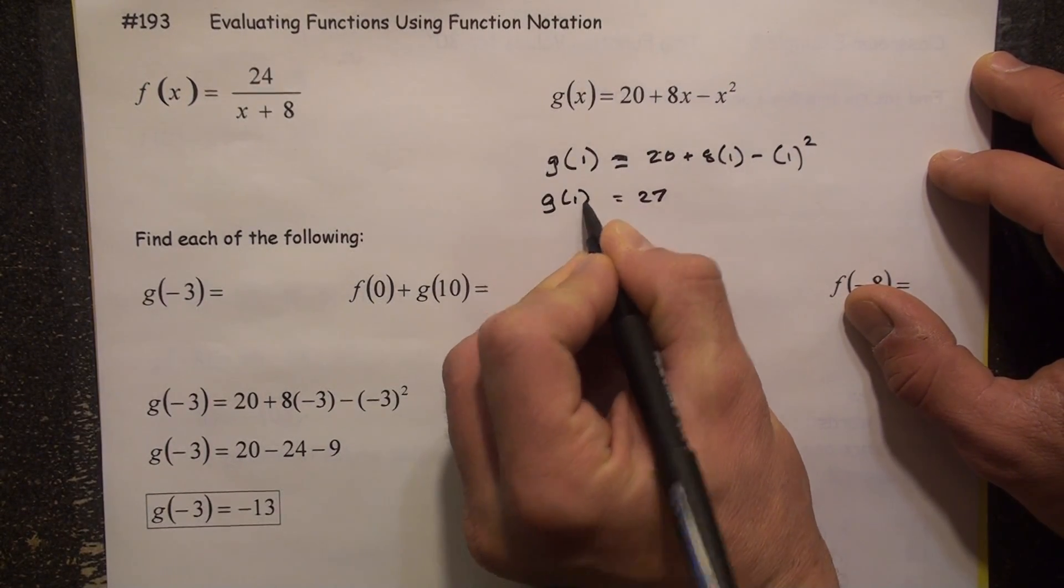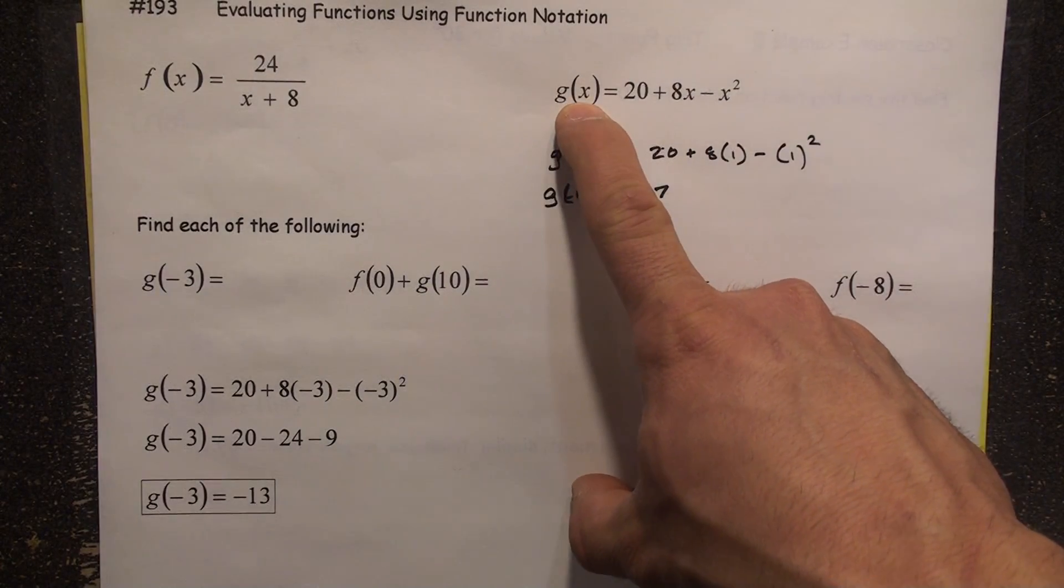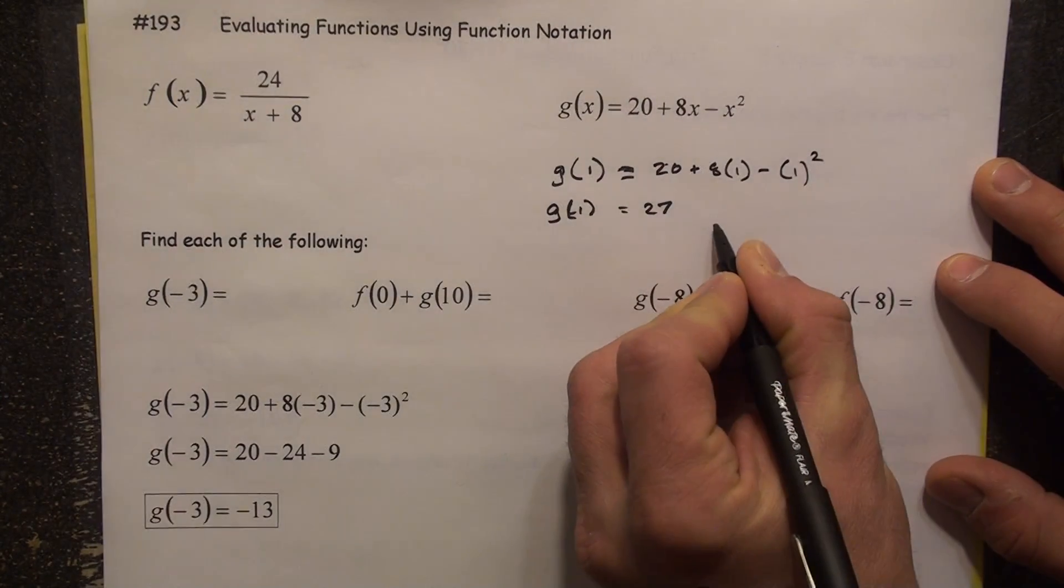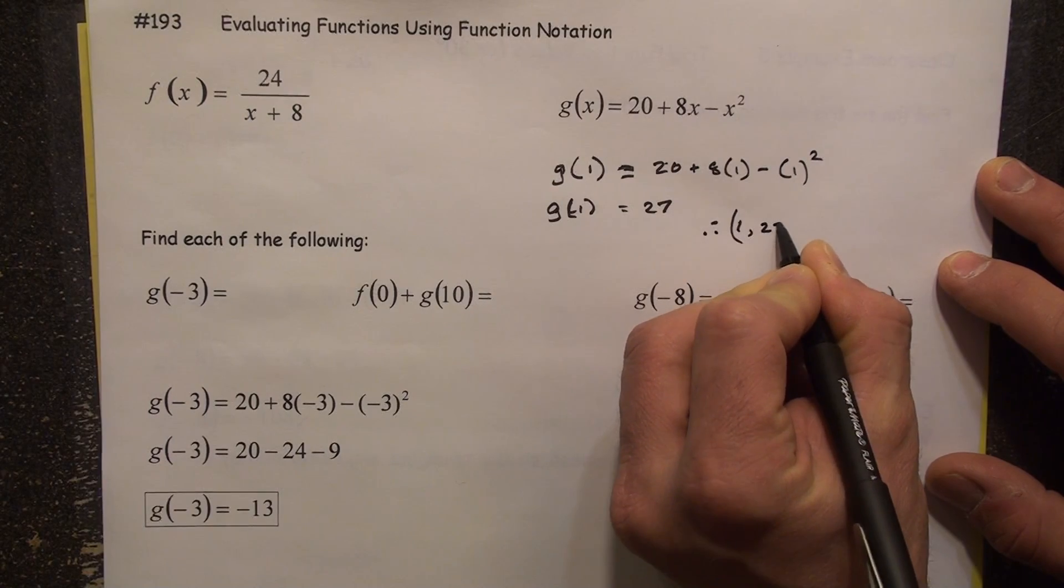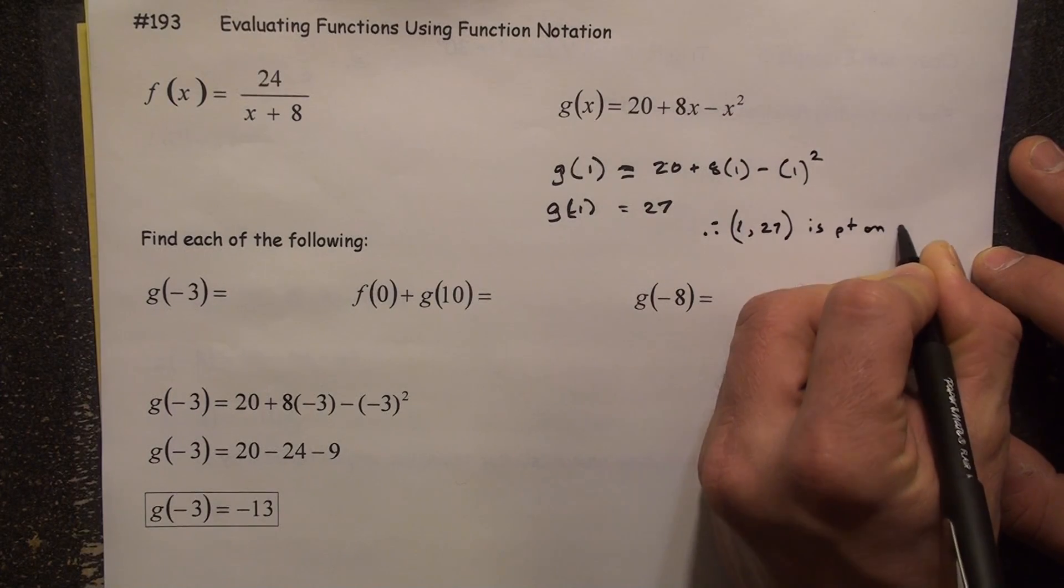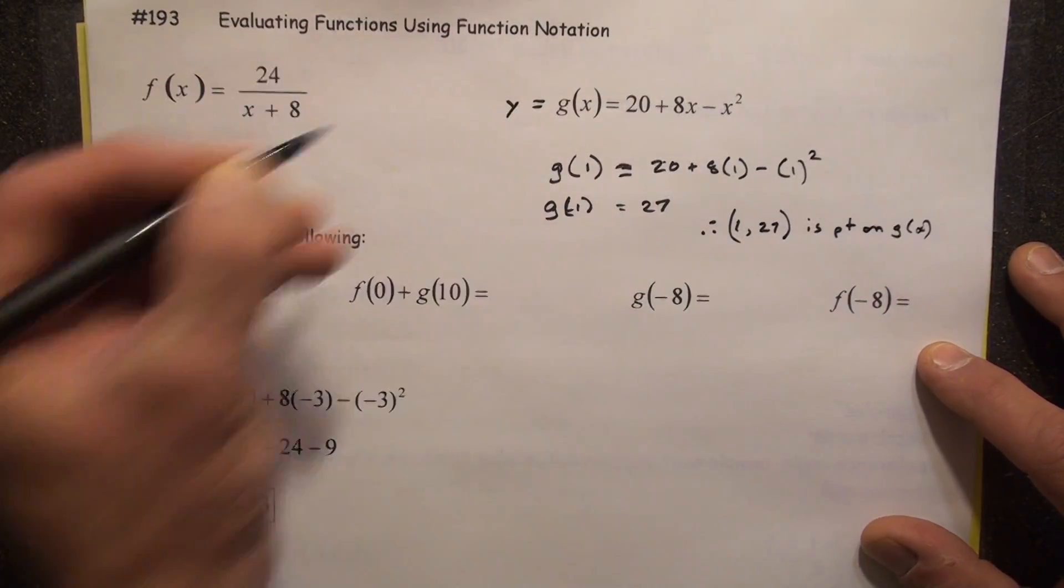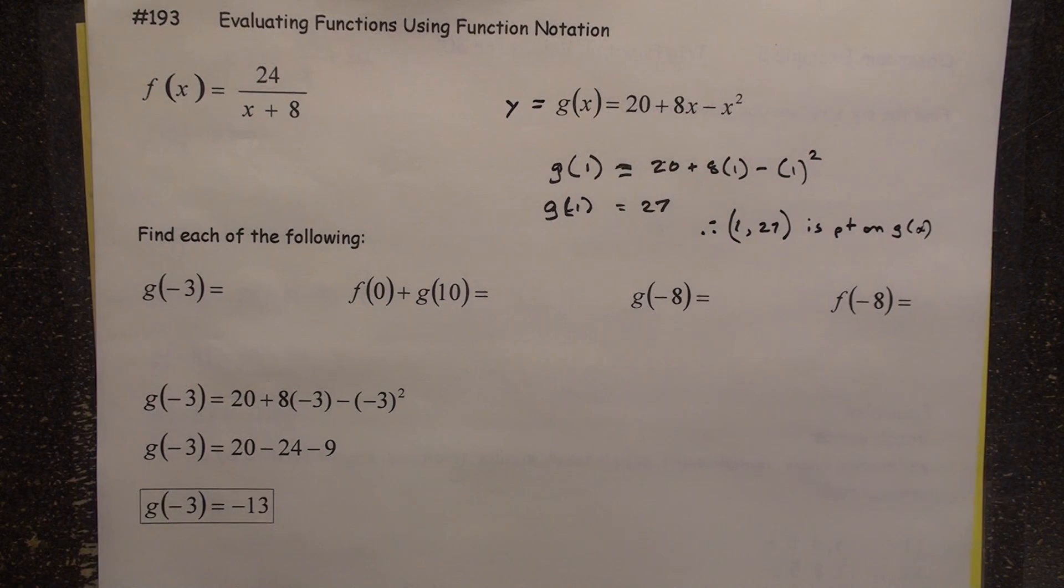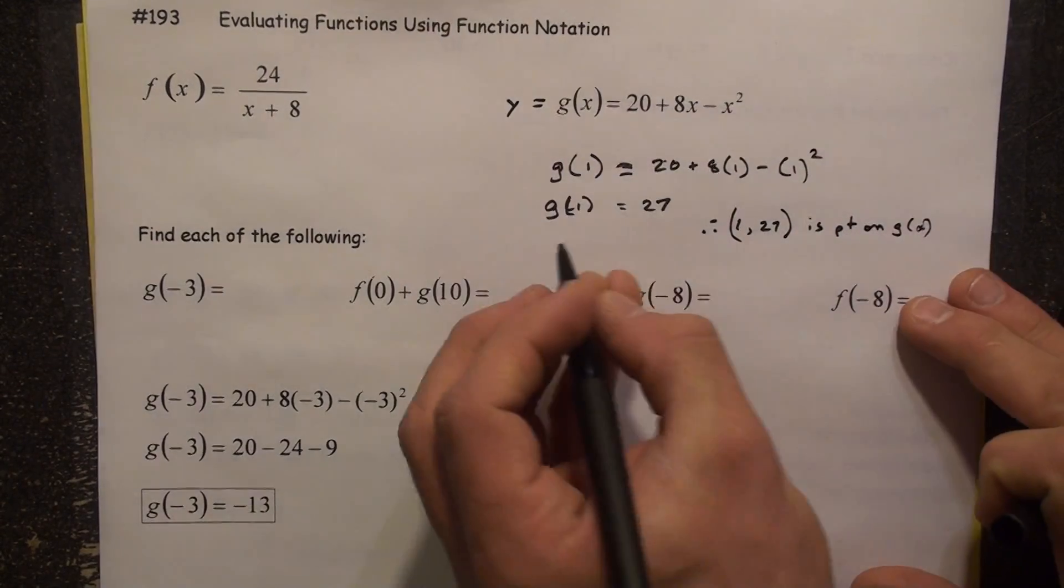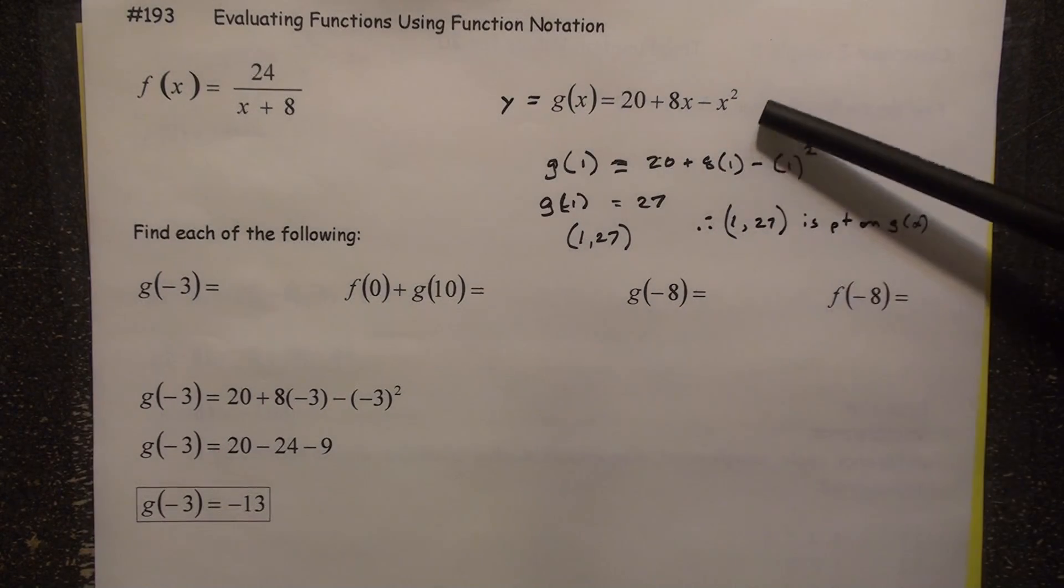So we could say that g of 1 equals 27. Or in other words, the g function at 1 is 27. In other words, therefore, 1 comma 27 is a point that is on g of x. If you were to graph g of x, now we also think of g of x as being a y value. So I just want to point out one of the really awesome benefits to using this function notation is that 1 comma 27 is a solution to that equation. It's really neat.